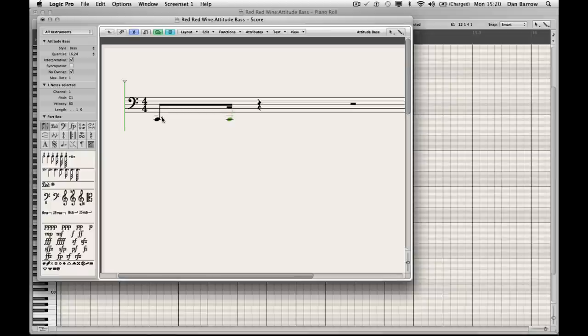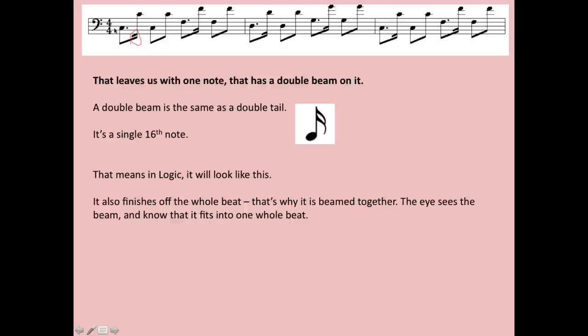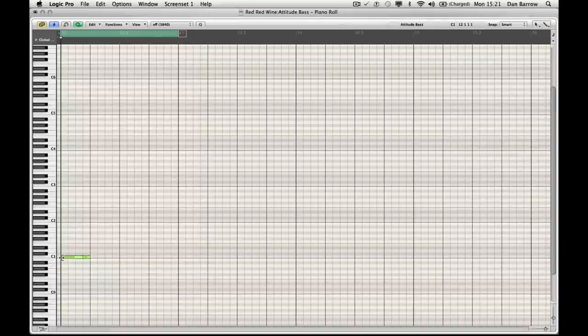The score, yeah it's quite big, but it's the same thing. It's a dotted note there with a single beam and then a note here with a double beam. Now notice that what that means is that it finishes off the whole beat. That's why we beam notes together - the eye sees it as a beam and it just knows that the whole thing fits into one whole beat. Now I haven't put in the right notes and that's deliberate because I'd like you to work out what the notes are, but that is what the rhythm will look like. Good luck.